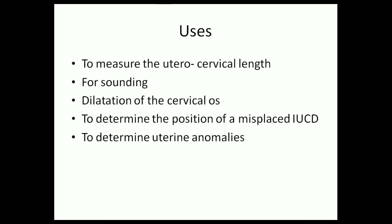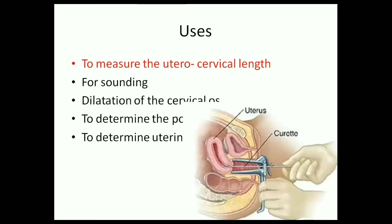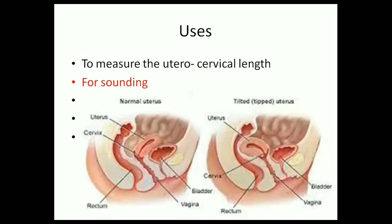A uterine sound can be used to measure the uterocervical length because it has calibrations. The main function of a uterine sound, as its name suggests, is sounding — a process by which we determine the position or the direction of the uterus and see if it is anteverted or retroverted.